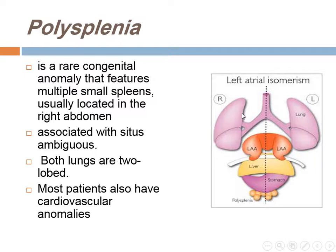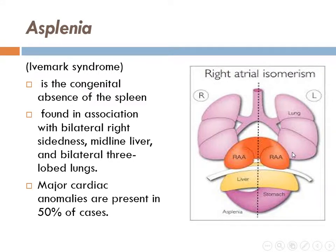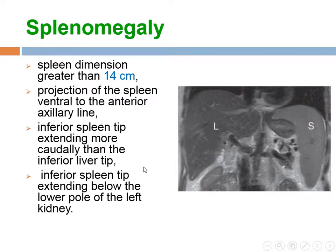Polysplenia is a congenital anomaly with multiple spleens located in the right abdomen associated with situs ambiguus, and both lungs are bilobed. Asplenia is a congenital absence of the spleen associated with bilateral right-sidedness, midline liver, and major cardiac abnormalities present in 50% of cases — most cases die within the first year, making asplenia worse than polysplenia. Splenomegaly: radiologically, we can see the spleen dimension greater than 40 cm, projection of the spleen ventral to the anterior axillary line, or the inferior spleen extending more caudally than the inferior border of the left kidney, or more inferior than the inferior border of the liver.